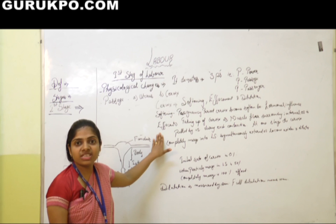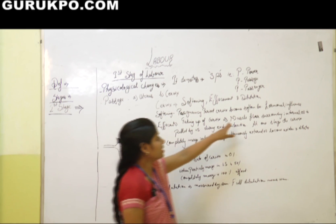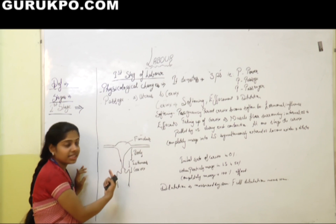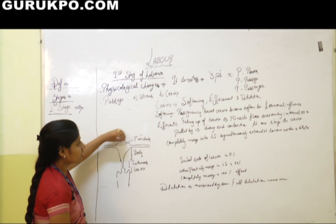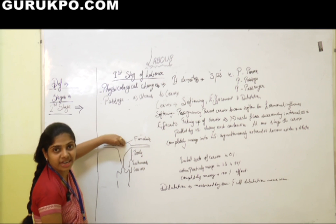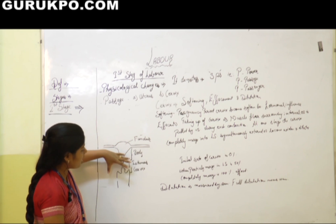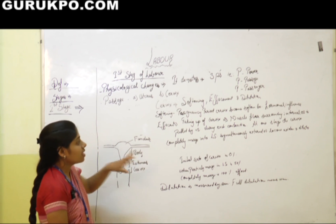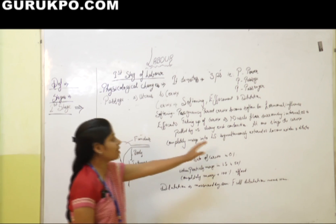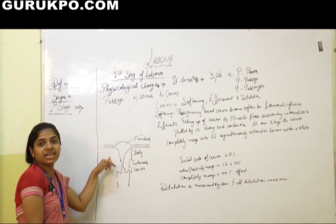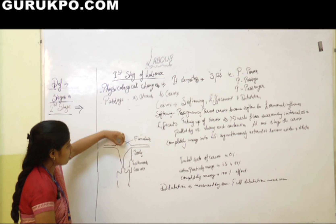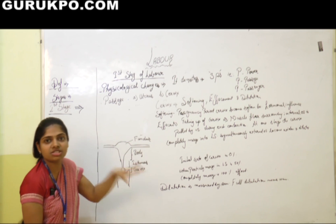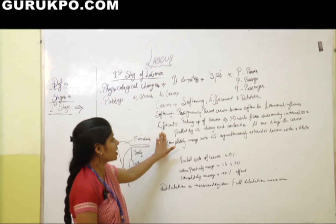Effacement is the taking up of the cervix. The muscle fibers surrounding the internal os are pulled by the upper uterine segment during each contraction. At one stage the cervix completely merges into the lower uterine segment, which is known as the taking up of the uterus. Initially effacement is 0%; when the cervix is partially merged it is 50% effaced; when completely merged it is 100% effaced.